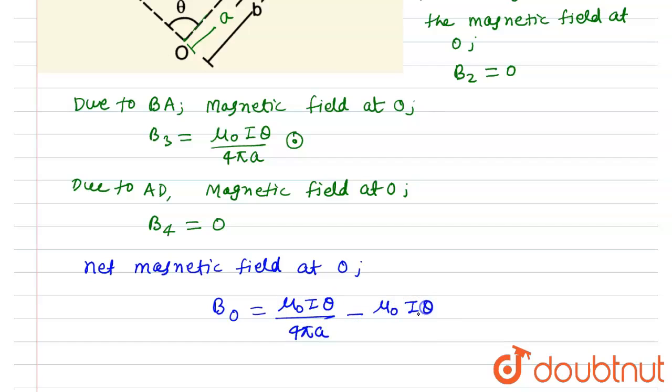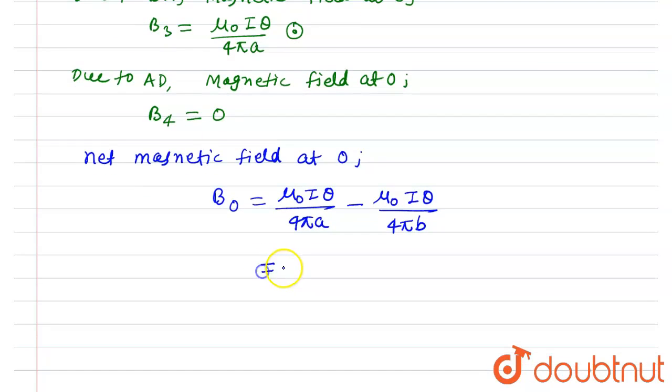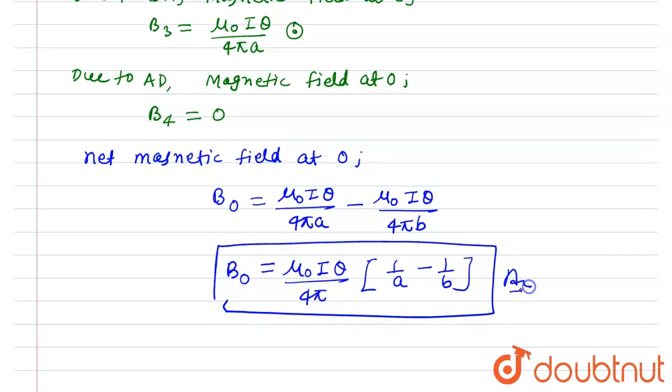After solving, this will be equals to μ₀Iθ/(4π) times (1/a - 1/b). So this is the magnetic field at O at the center. This is the answer to this problem.